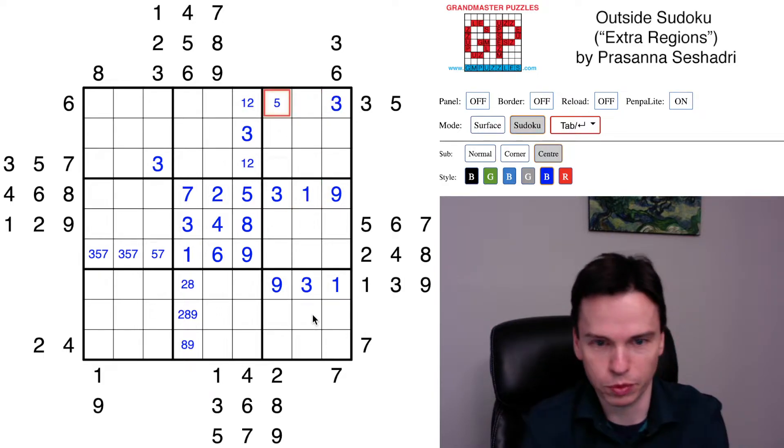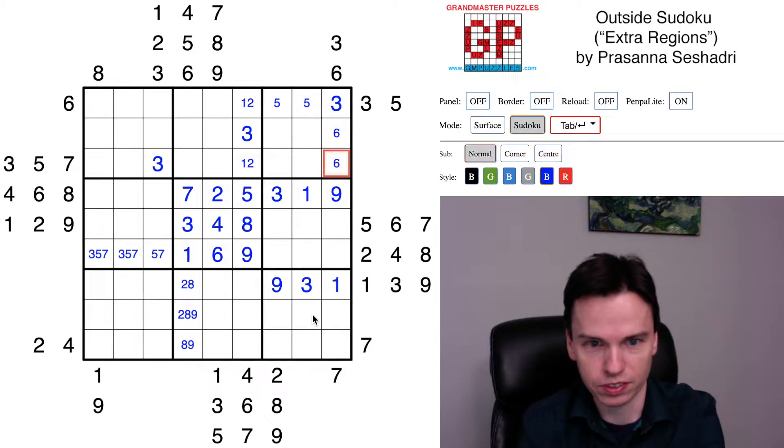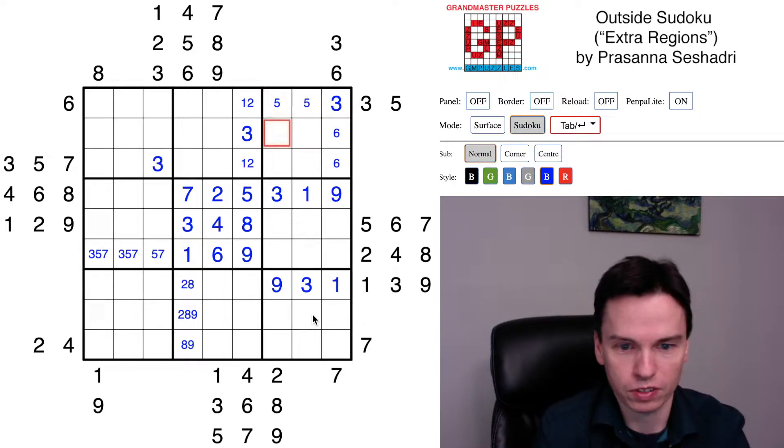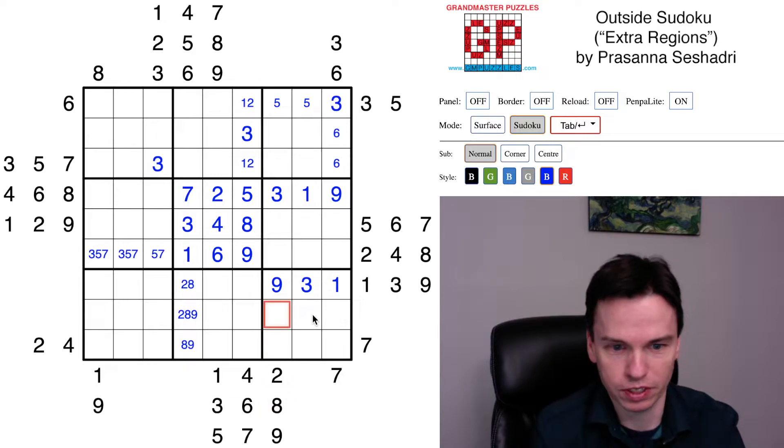We get a 3 at the intersecting point. 5 in these cells, 6 in these cells, 1 is somewhere in the space. Back to here, this 2, 8, 9 needs a 2, 8 in the remaining cells but 2 is to the left so this comes over.